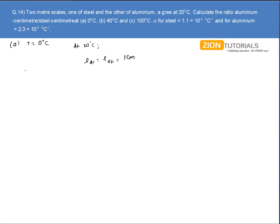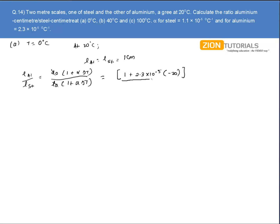The ratio of aluminum to that of steel can be written as L0 times (1 plus alpha times delta T) divided by L0 times (1 plus alpha times delta T). L0 cancels because at 20 degree the length of one centimeter is same. For 0 degree it comes out to be: 1 plus alpha for aluminum, which is 2.3 into 10 to the power minus 5, into minus 20, because it is 0 minus 20, divided by 1 plus 1.1 into 10 to the power minus 5 into minus 20. On solving this I get the ratio as 0.999759.